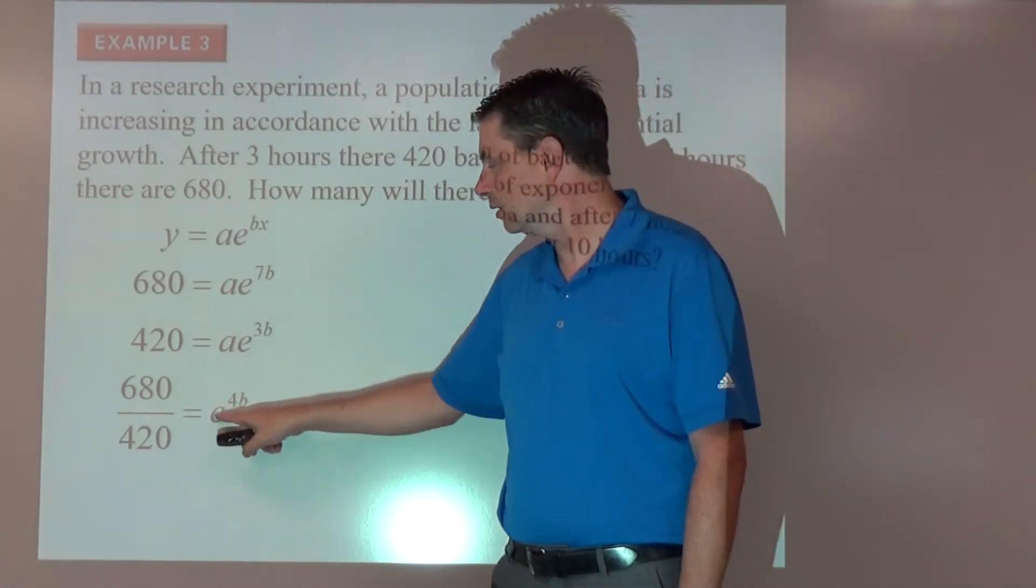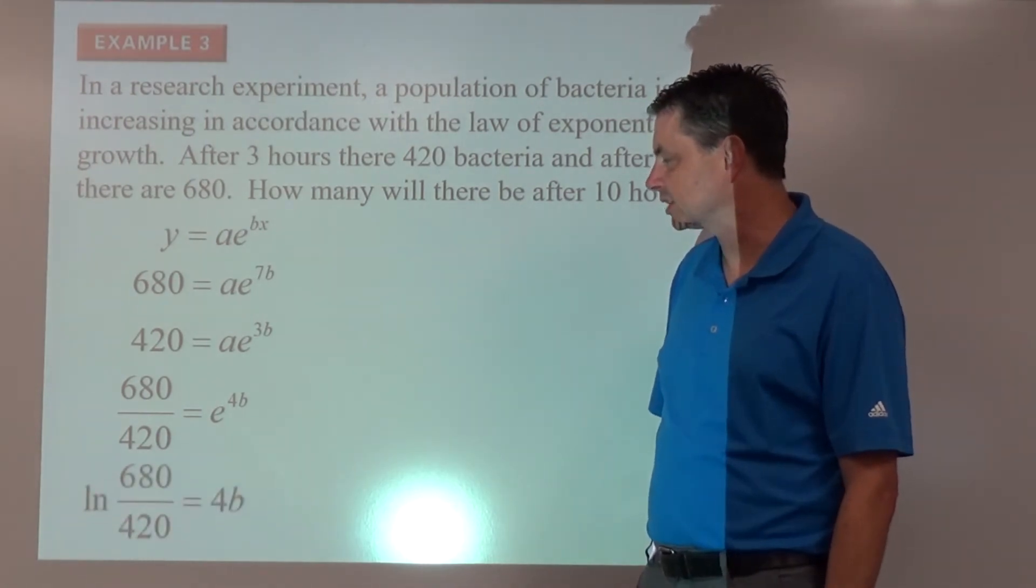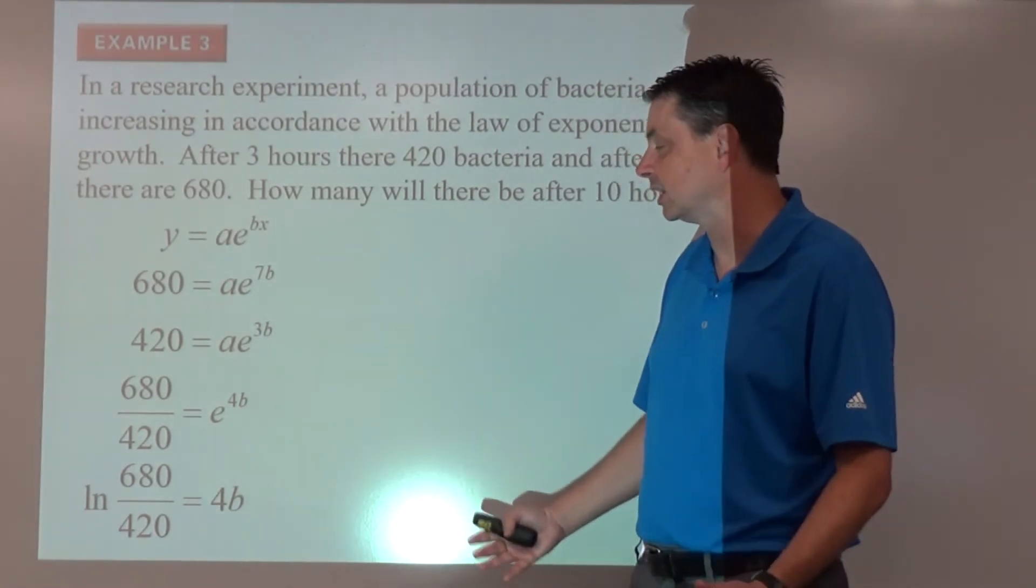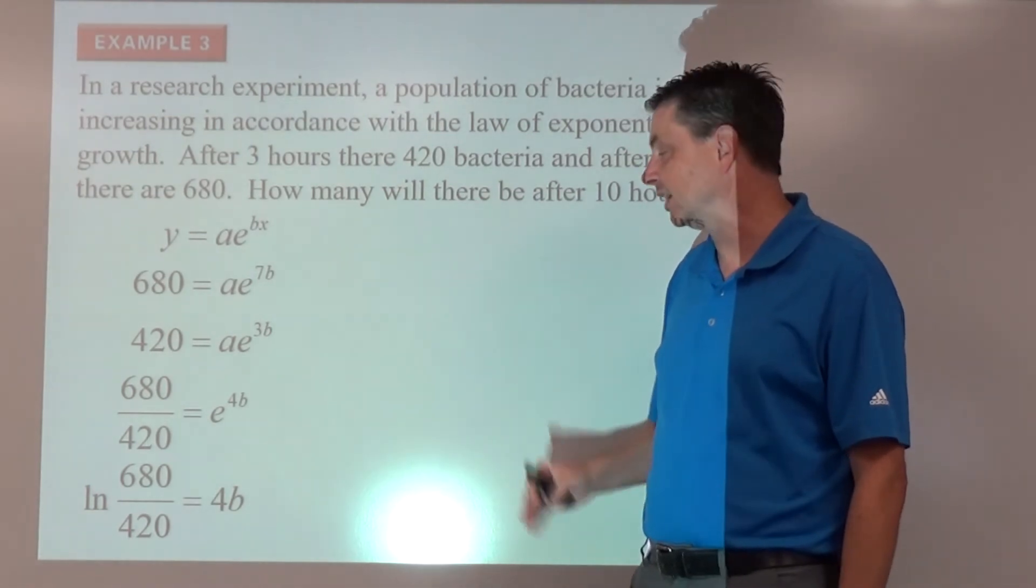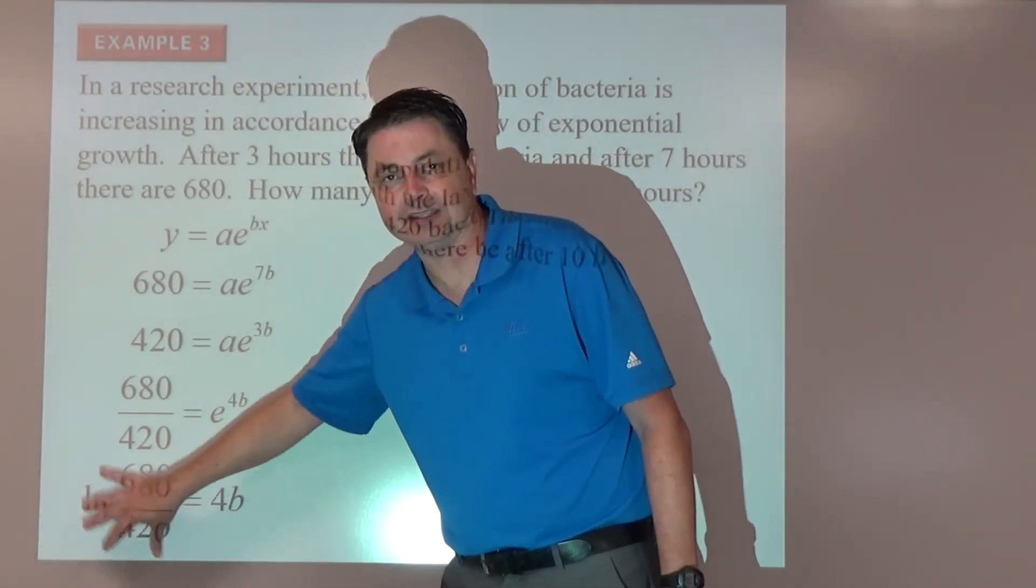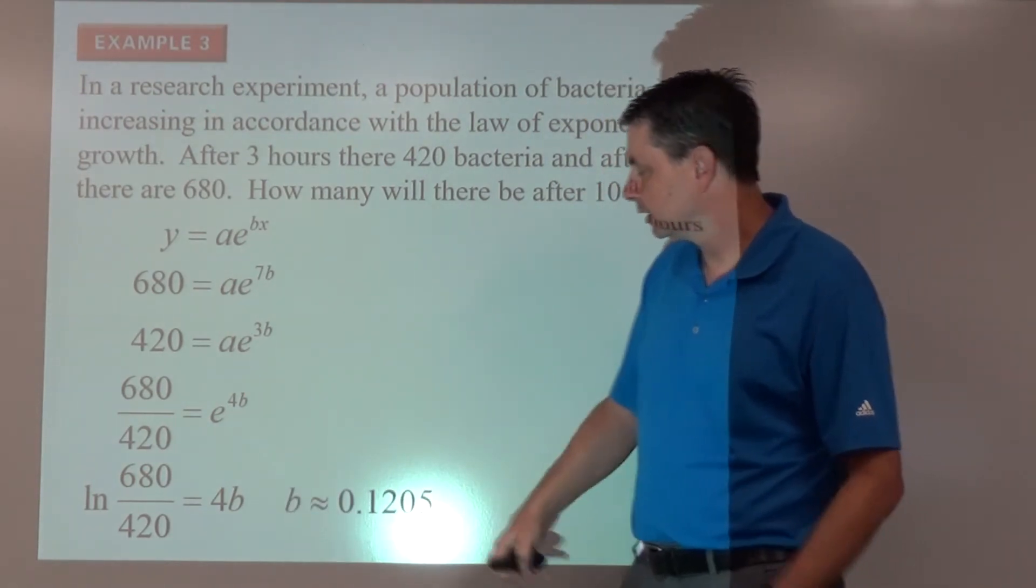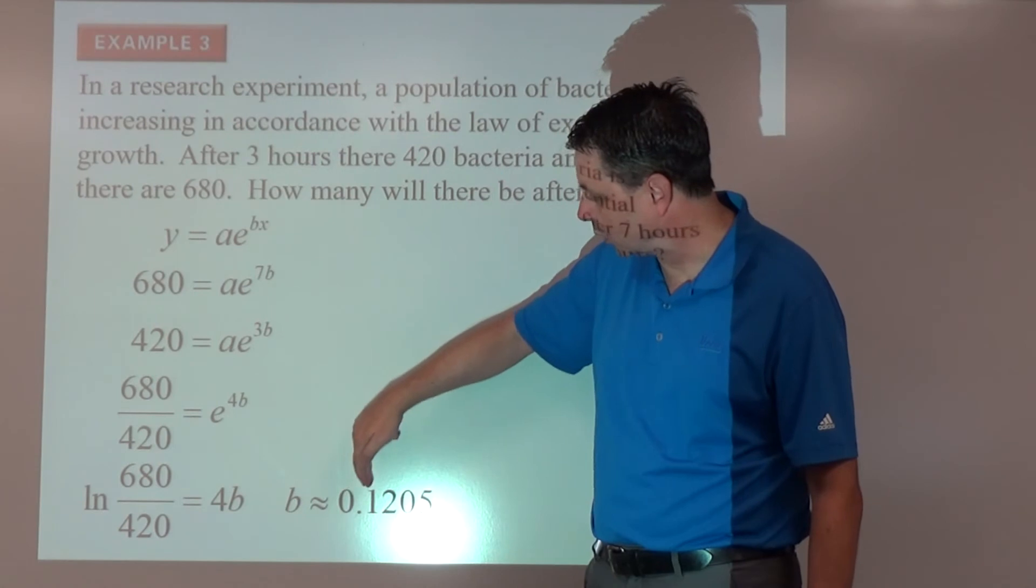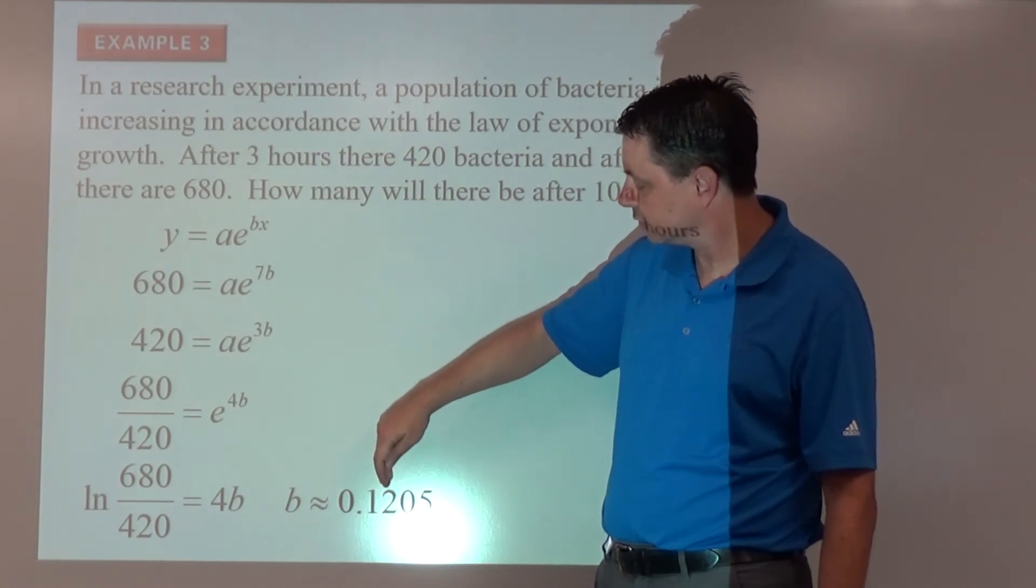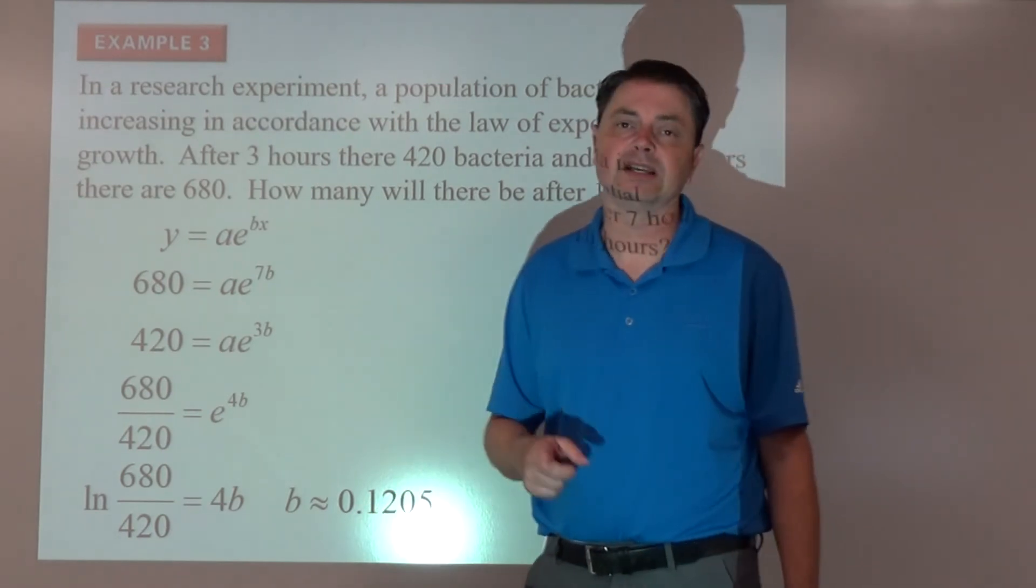And now we're going to solve for b by rewriting as a logarithm. It's a natural logarithm. So the natural log of 680 over 420, or maybe you reduced it to 68 over 42, or even further, does not really matter because we're looking for a decimal value for b. So as far as calculator goes, you might want to just calculate this and hit equals, and then we'll divide by 4. So b is approximately 0.1205. So our significant digit starts at the 1. 2, 0 counts this time because it's in the middle. 1205 after the decimal is our b value.